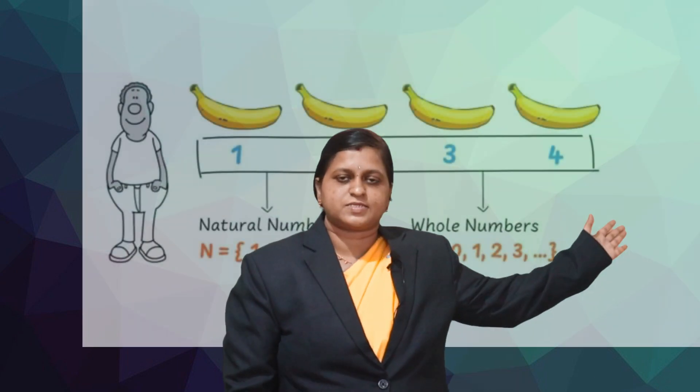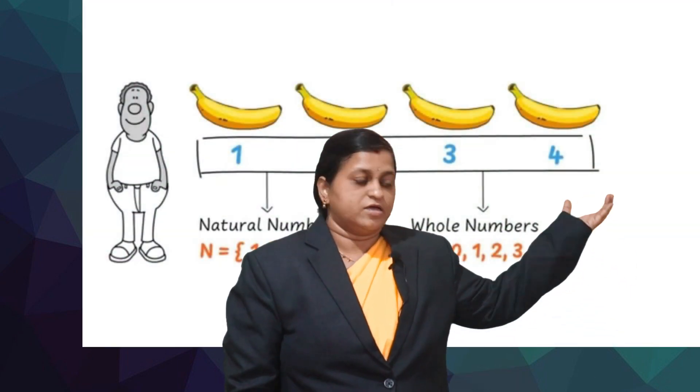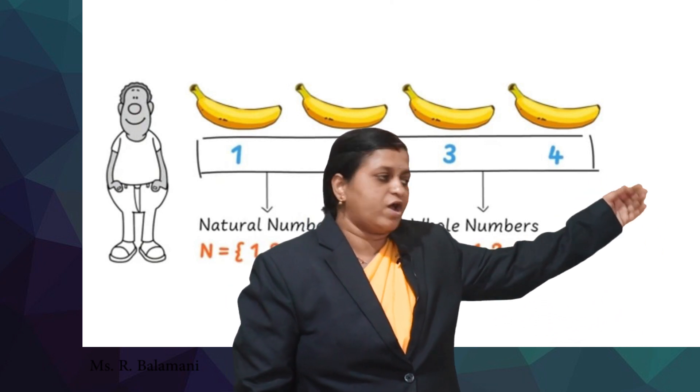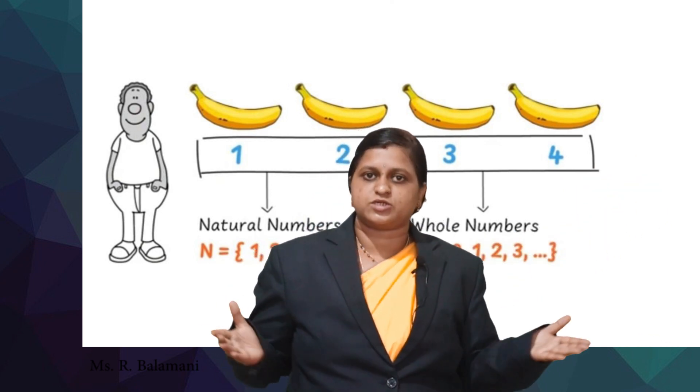Let us consider the example of bananas. If we count them one, two, three, four and so on are called natural numbers.